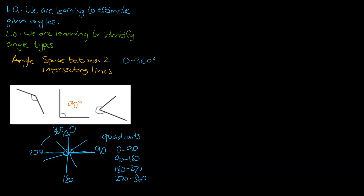Let's have a look at the tricky one on the right. We draw our initial line going across like this. We know it goes all the way around here — so there's 90 degrees, there's another 90 degrees, there's another 90 degrees — and it's gone a little bit more than that. So I know it's above 270 degrees because there's one, two, three quadrants, plus a little bit more. Maybe that last portion looks like about a third, so a third of that last 90 is another 30 degrees. So combined we have 270 from the three quadrants plus 30, which means my estimate for that angle would be 300 degrees.